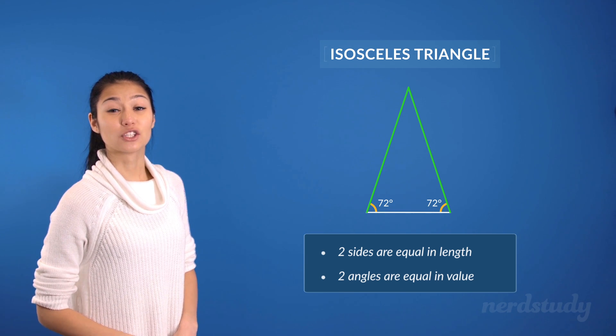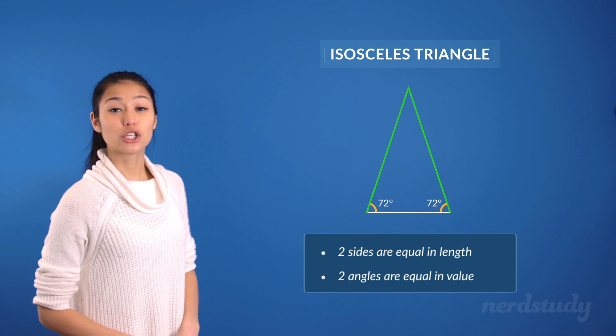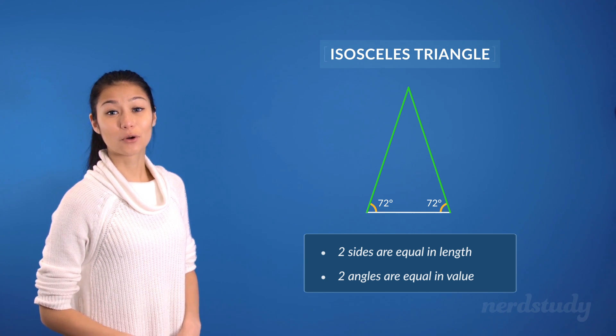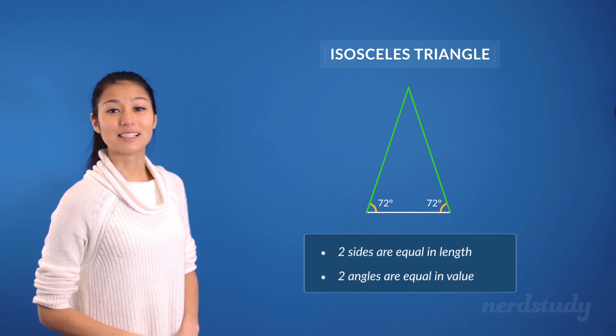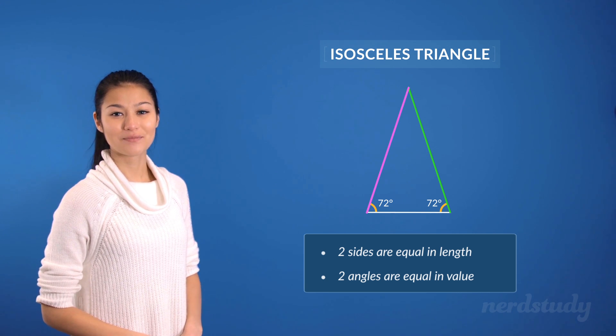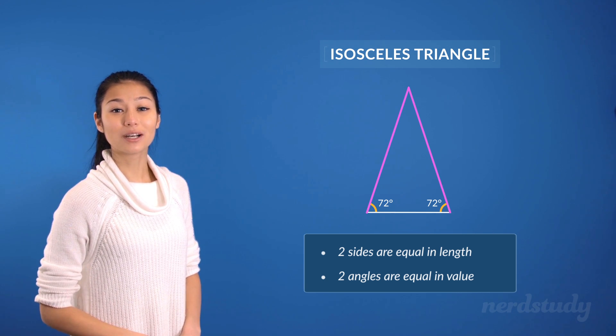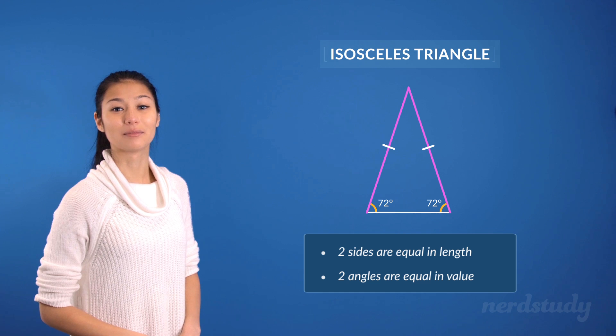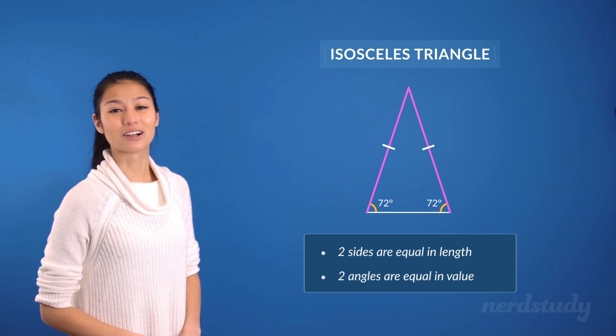One way to show that two sides are equal is through the use of little hatch marks. For example, since this isosceles triangle is equal in lengths over here and here, we can put a small hatch mark on both of them to indicate that they are equal.